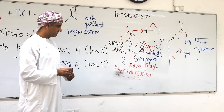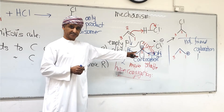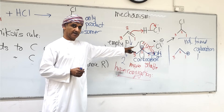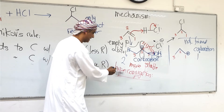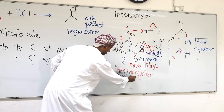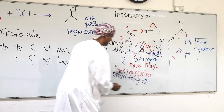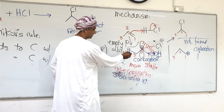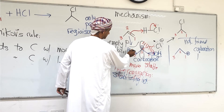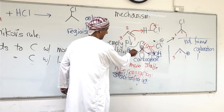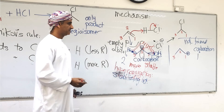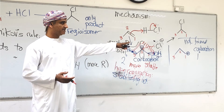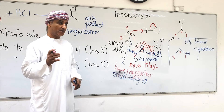Hyperconjugation is a stabilizing interaction between the CH sigma bond on one carbon and a nearby empty p-orbital on an adjacent carbon. The more of these stabilizing interactions in a carbocation, the more stable the carbocation will be. There are two hyperconjugations in the secondary carbocation — one from each methyl group — which makes it more stable than the primary carbocation.